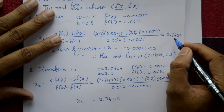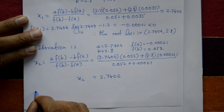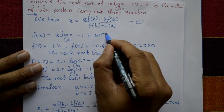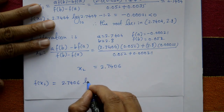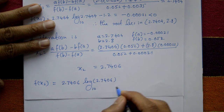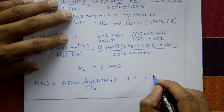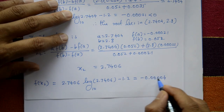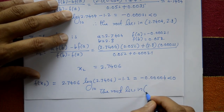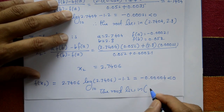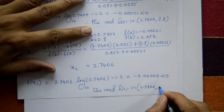Comparing x1 and x2, one more iteration is needed as the question specifies 3 iterations. Evaluate f(x2) = 2.7406·log₁₀(2.7406) - 1.2 = -0.000004. Again negative, so update a = 2.7406, b remains 2.8.